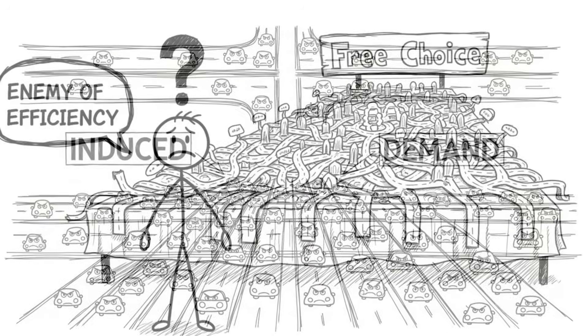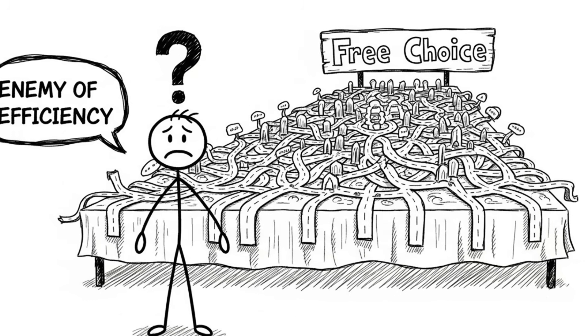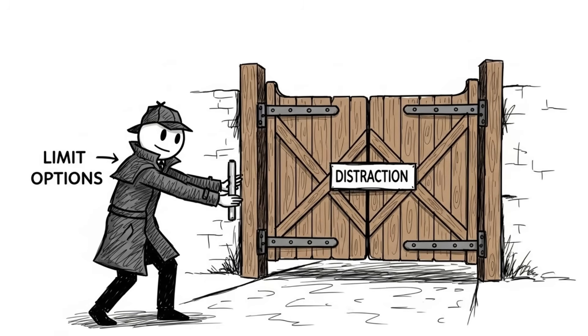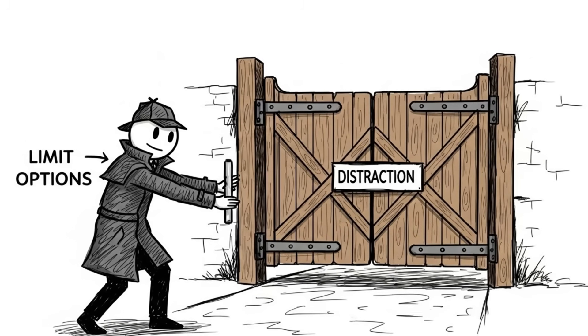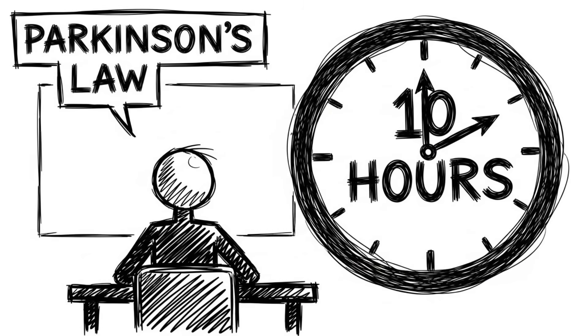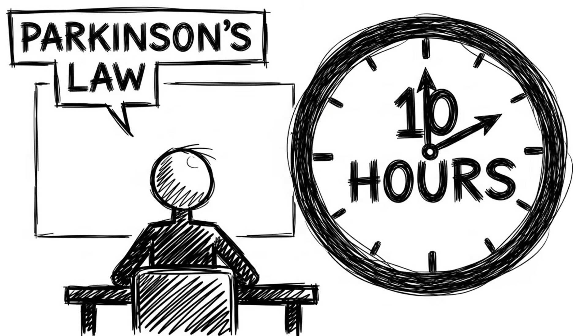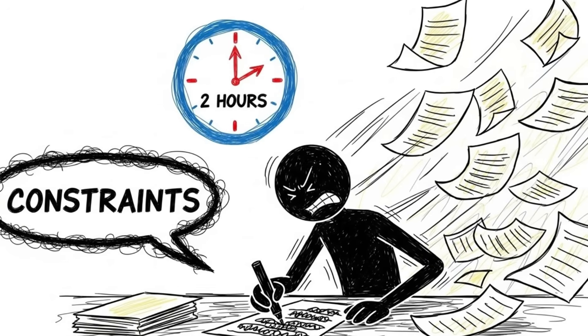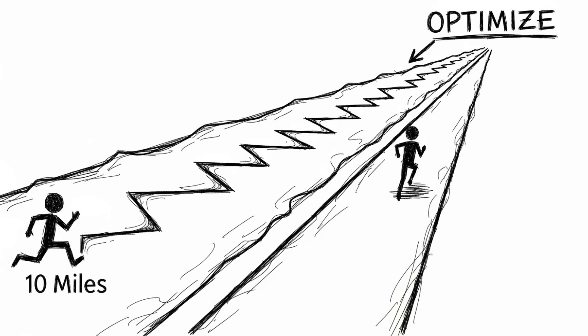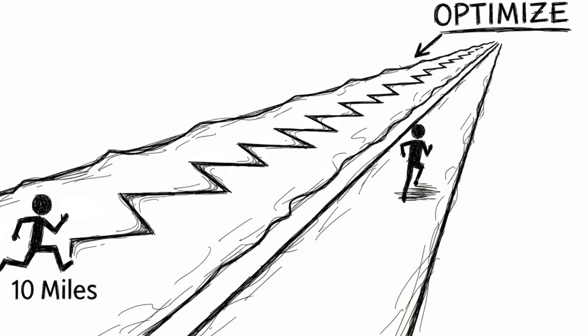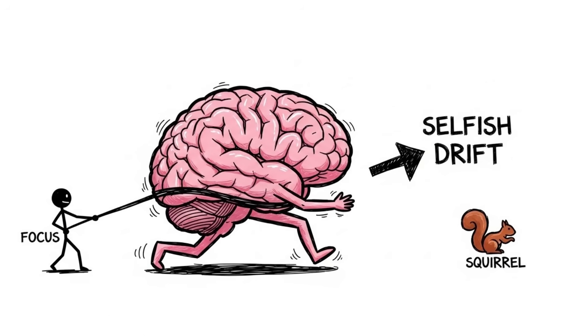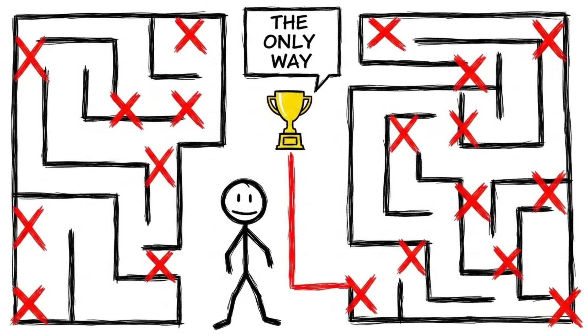We see this in induced demand. You widen a highway to fix congestion, and within a year, the traffic is just as bad, if not worse. Braess's paradox proves that in complex systems, individual freedom of choice can be the enemy of efficiency. Sometimes, the only way to win is to limit the options. This applies to your productivity, too. If you give yourself 10 hours to do a task, you will take 10 hours. Parkinson's law. If you block the road, restrict your time to 2 hours, you often get the same work done faster. Constraints don't limit performance. They often optimize it by eliminating the selfish drift of your attention.